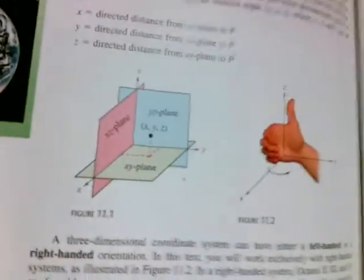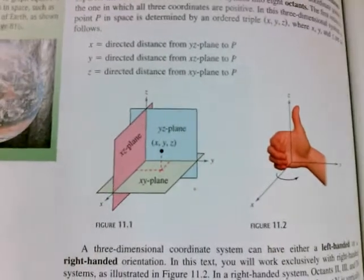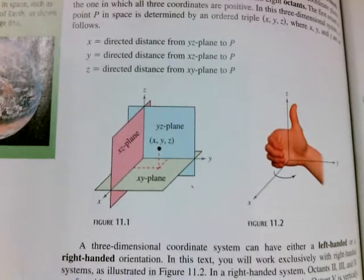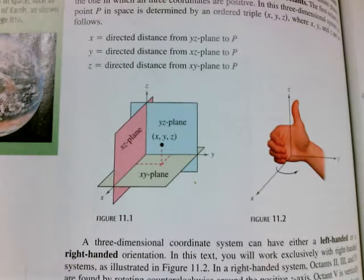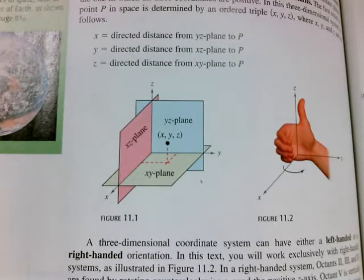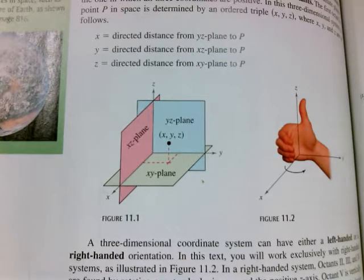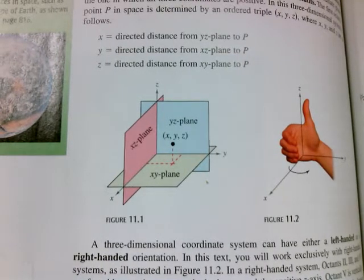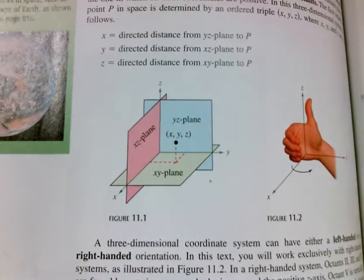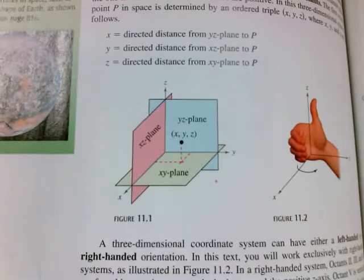The next picture in your book talks about the rotation of these different systems. So when we do three-dimensional drafting, like in engineering, when we're using software to draw images in three dimensions, we can rotate those axes. The axes always stay at 90 degrees to each other, but that allows us to look at different facets or different sides of our three-dimensional images.